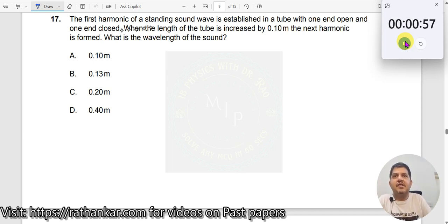Question number 17. The first harmonic of a standing sound wave is established in a tube with one end open and one end closed.